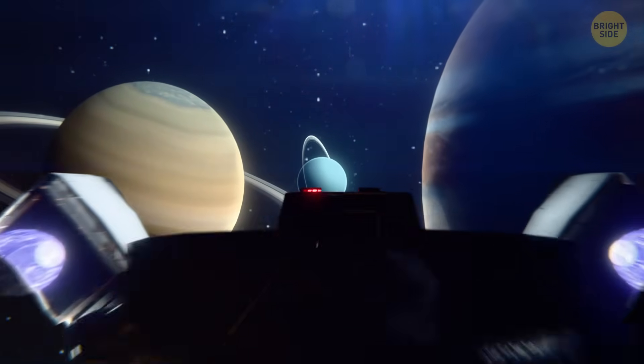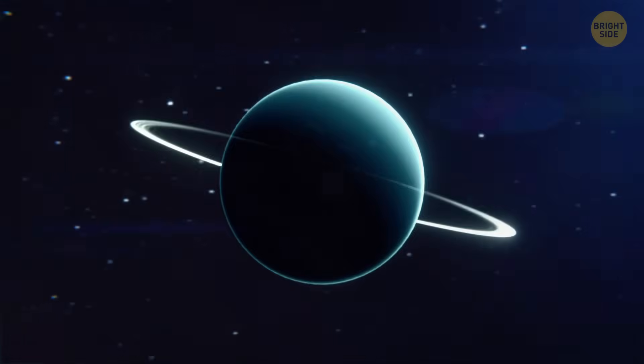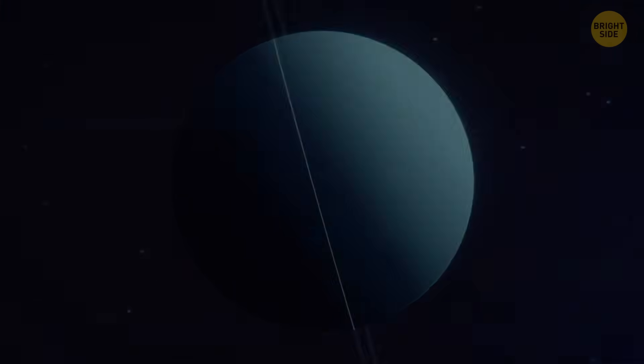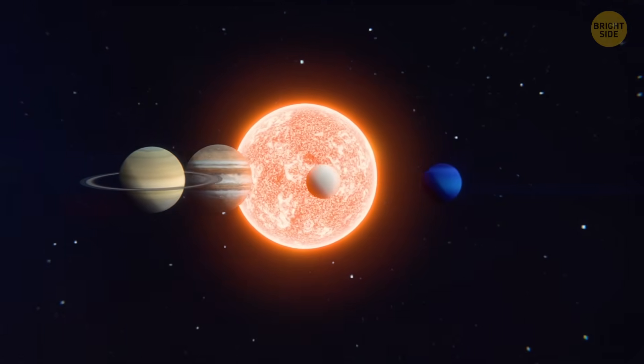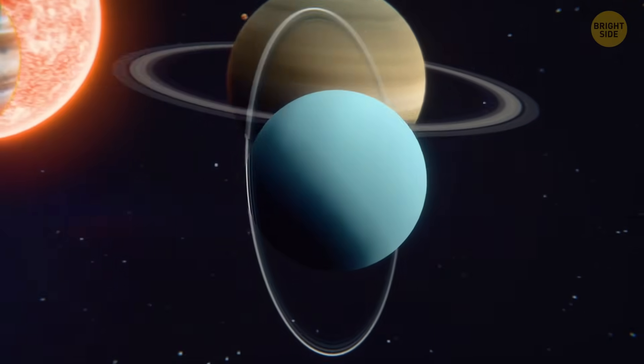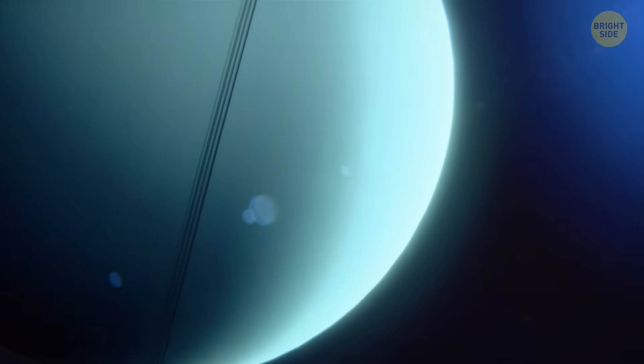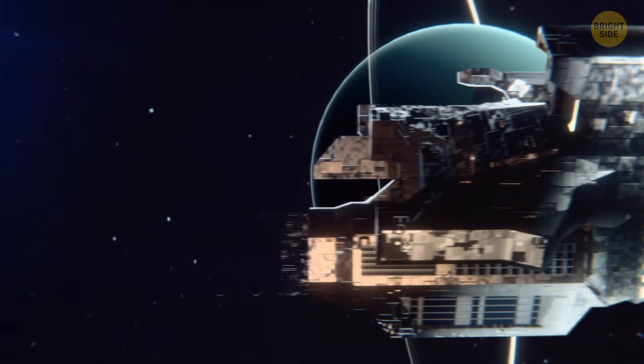Uranus is an enigmatic giant that has puzzled astronomers for centuries. But what sets this gas giant apart from the others is its strange tilt. While most planets spin on an axis perpendicular to their orbit, Uranus takes a wild spin in a different direction. But why does it look like this? How did the planet turn out to be lying on its side? And what would we see if we visited the surface of such a planet?